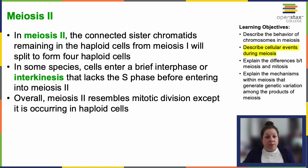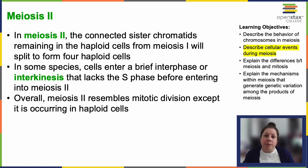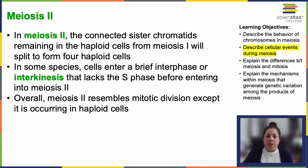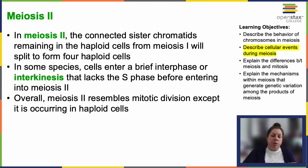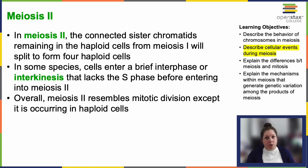Now we can move into meiosis II. This is where we split the connected sister chromatids in the haploid cells from meiosis I, resulting in four haploid cells. Some species enter a brief interphase called interkinesis before meiosis II — there's no DNA duplication that occurs, it's just a pause. We actually see this in humans, where eggs and sperm finish meiosis I and kind of pause waiting for meiosis II to occur. The two cells produced by meiosis I are going to go through meiosis II concurrently, and this will resemble mitotic division of haploid cells.